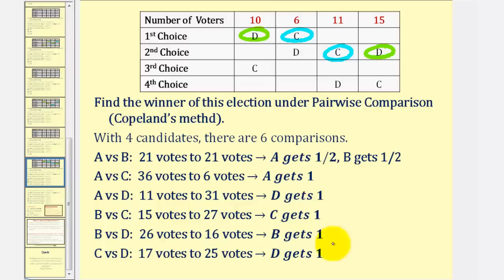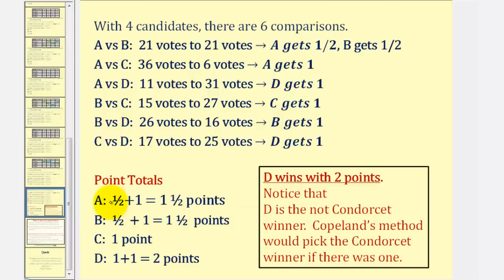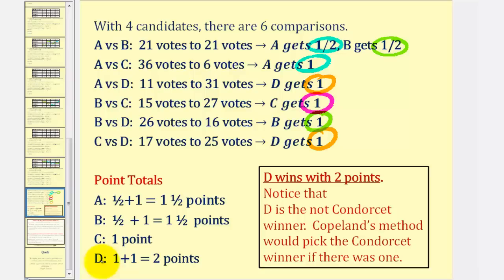Now to find the winner, we'll sum the points for each candidate. Candidate A receives one-half plus one, or one-and-a-half points. Candidate C only has one point. And candidate D receives one plus one, or two points. Therefore, candidate D wins. Notice that D is not a Condorcet winner — Copeland's Method would pick the Condorcet winner if there was one.